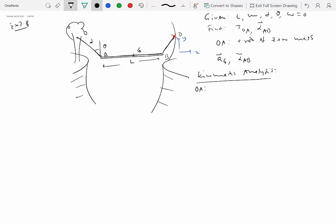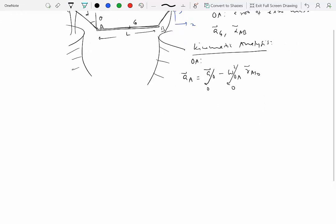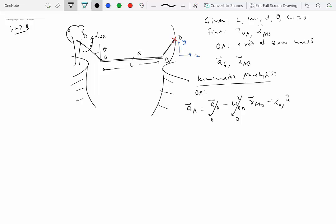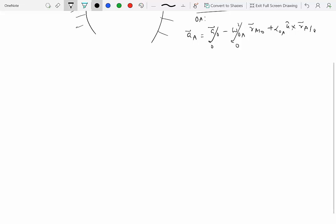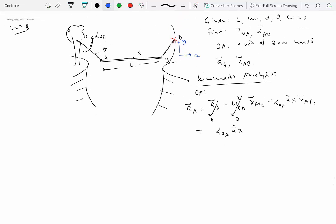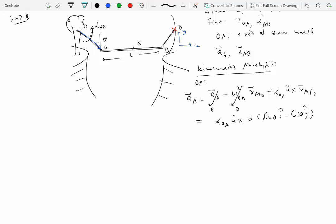So we'll do the kinematic analysis first. For OA, what do we have? We have acceleration of A equal to acceleration of O, which by the way would be zero because O is a fixed point, minus omega_OA squared R of A with zero, which will also be zero because the angular velocity is zero. Everything started from rest. Plus alpha_OA k hat, which we don't know what it is, so we just assume that this is positive alpha_OA counterclockwise cross R of A with respect to O. Now what is R? So we write alpha_OA k hat cross R of A with O, this vector is D sine theta I hat minus cosine theta J hat.